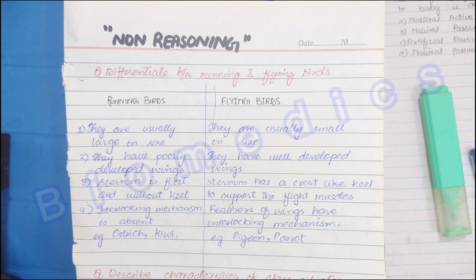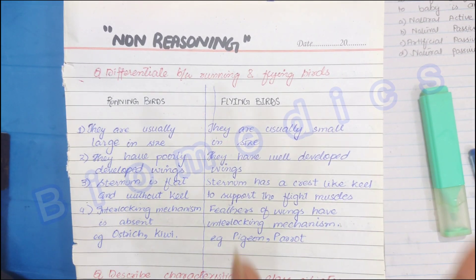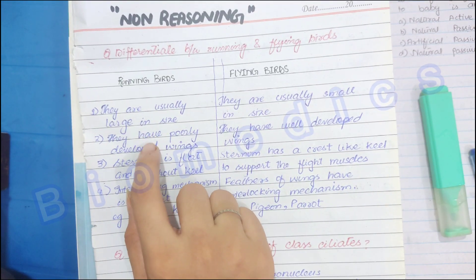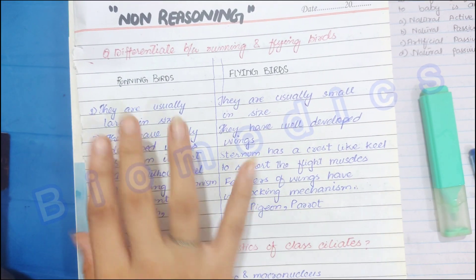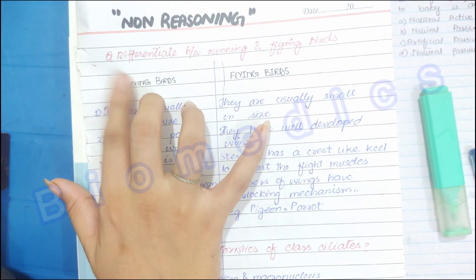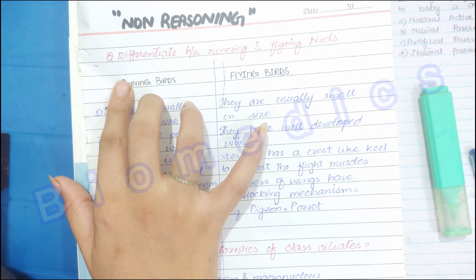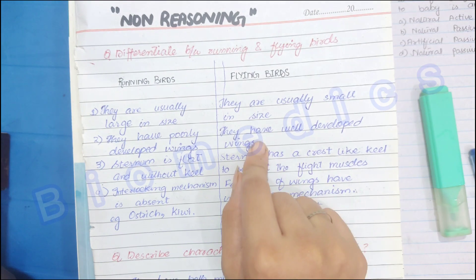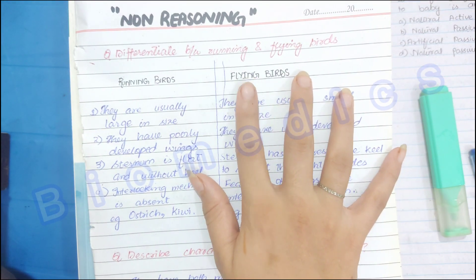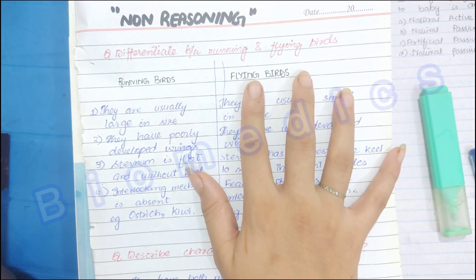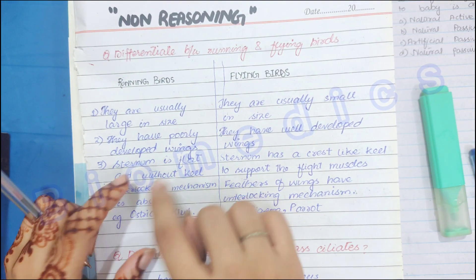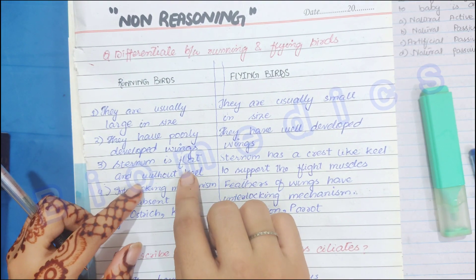Flying birds have flight adaptations — their weight is very light and they have hollow bones. Running birds have poorly developed wings because they don't need to fly, whereas flying birds have well-developed wings.